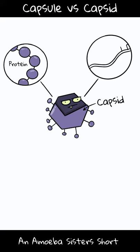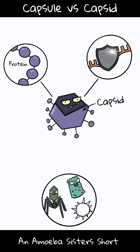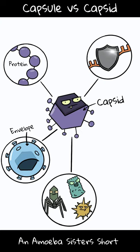A virus capsid, on the other hand, is a virus's protein coat. It's made of proteins and protects the virus's genetic material. Its shape can vary. In fact, viruses can be classified based on their capsid shape. In addition, many viruses have an envelope in addition to their capsid. Generally, a virus's ability to bind to its host will involve the viral capsid or envelope.